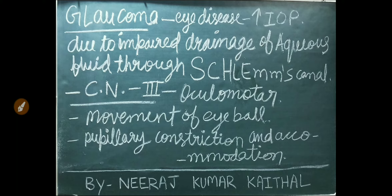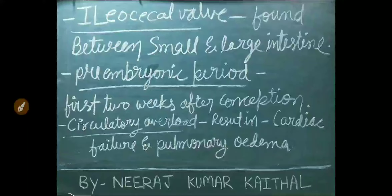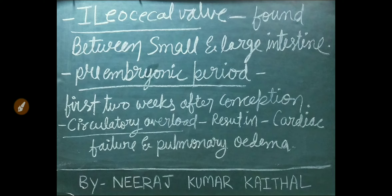Cranial nerve number 3 is oculomotor. It is related with the movement of the eyeball, pupillary constriction, and accommodation. Ileocecal valve is found between the small and large intestine.